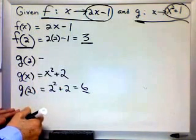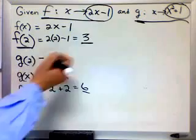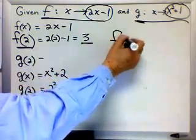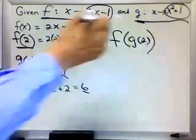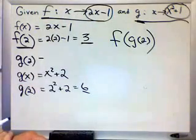All right, now we're going to get a tricky one. f of g of 2. Oh boy. That one's tricky.